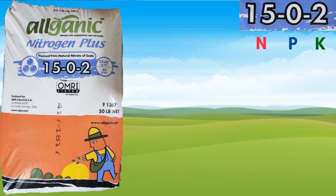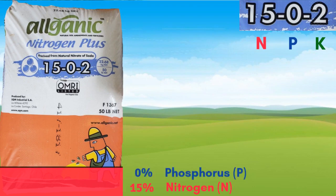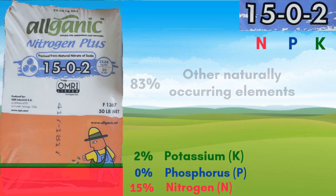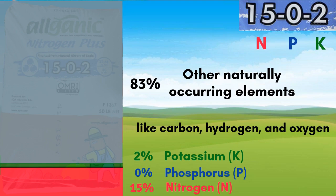In other words, 15% of the bag of fertilizer product is made up of nitrogen, 0% of the bag is made up of phosphorus, and 2% of the bag is made up of potassium. The remaining 83% is made up of other naturally occurring elements.